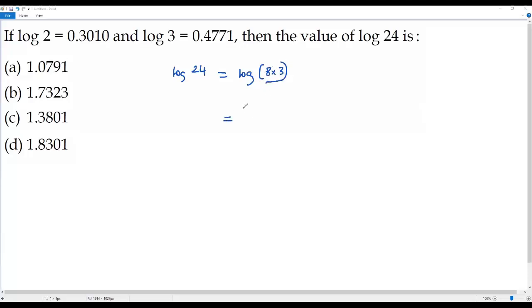Here the two values are in multiplication in the argument of this logarithm. So whenever two values are multiplied in the argument of logarithm, we can use the product rule of logarithm. So we take logarithm for each of these two values and add them. Then I will be getting log 8 plus log 3.